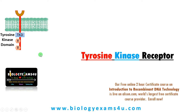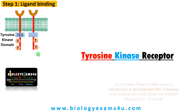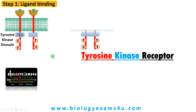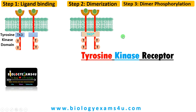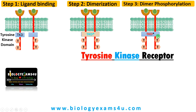Here are two monomers. Step 1 is ligand binding — the ligand binds to the receptor causing a conformational change. Step 2 is dimerization: as a result, both receptors come together and the tyrosine kinase domain is activated. Step 3 is phosphorylation of this dimer — the activated tyrosine kinase domain phosphorylates the tyrosine residues on the receptor. Phosphorylation is simply the addition of a phosphate group.